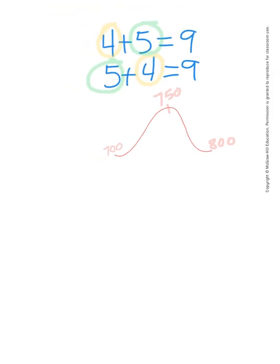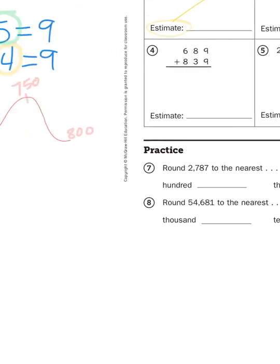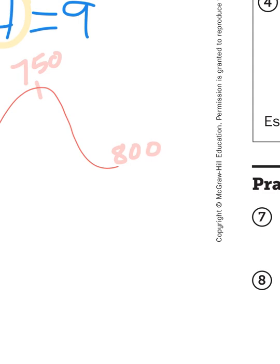So where does the number 795 fall? Well, that's right. It's practically to 800 already. 795, it's only 5 away. So, of course, I would round that to 800.